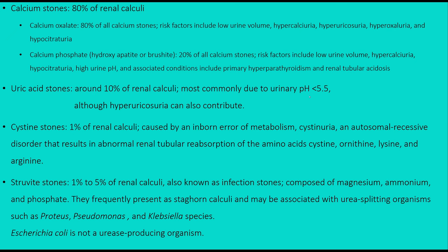Uric acid stones are common in acidic pH below 5.5, with hyperuricosuria contributing. Cystine stones are caused by the congenital inborn error of metabolism cystinuria, which is autosomal recessive. One to five percent of renal calculi are staghorn stones due to urease-producing organisms such as Proteus mirabilis, Pseudomonas aeruginosa, and Klebsiella species. E. coli is not urease-producing.